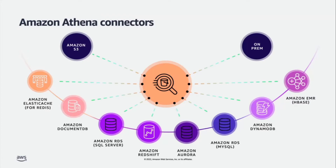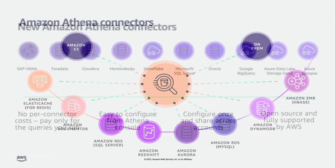With Athena federated query, you can run SQL queries across data stored in relational, non-relational, object, and custom data sources. The existing connectors include NoSQL services such as Amazon DynamoDB, ElastiCache, DocumentDB, relational databases like Amazon RDS, Amazon Aurora, and Amazon Redshift. AWS recently announced support for several new data connectors, including other cloud providers and ISVs.